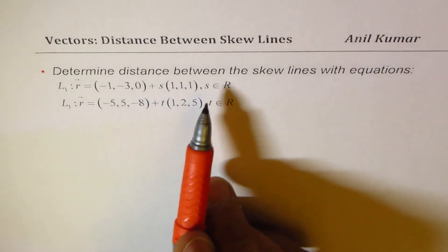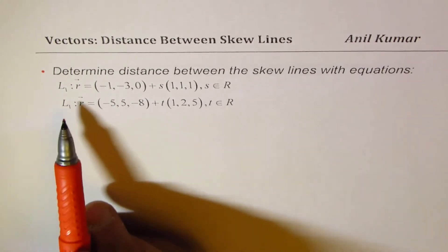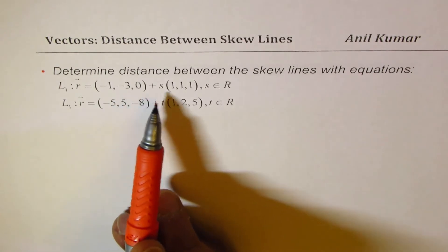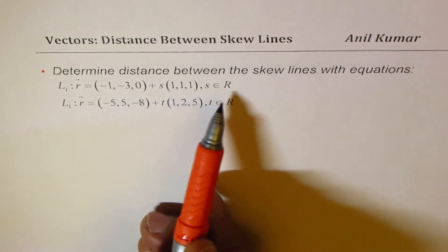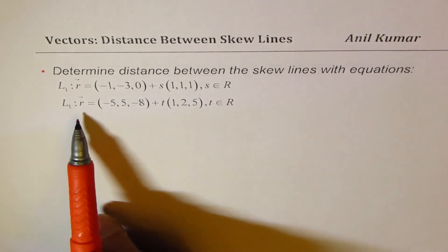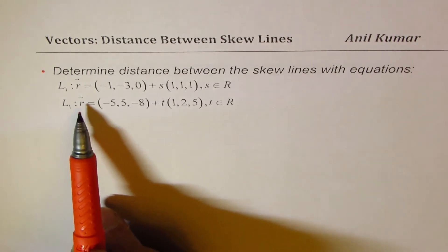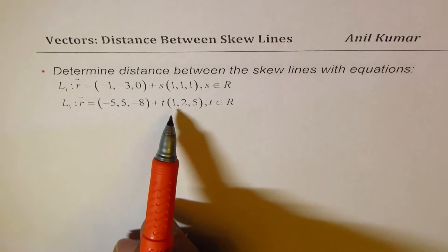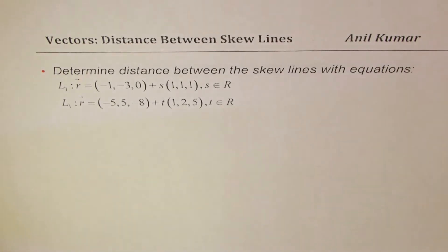determine distance between the skew lines with equations: L1: r equals minus 1, minus 3, 0 plus s times 1, 1, 1 where s belongs to real numbers, and line 2: r equals minus 5, 5, minus 8 plus t times 1, 2, 5 for t belongs to real numbers.